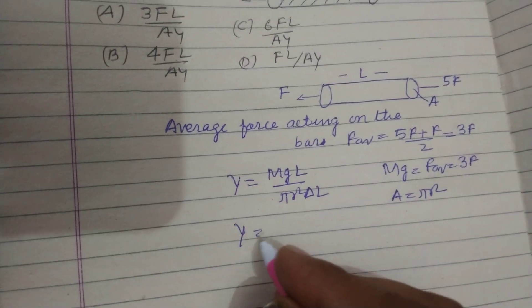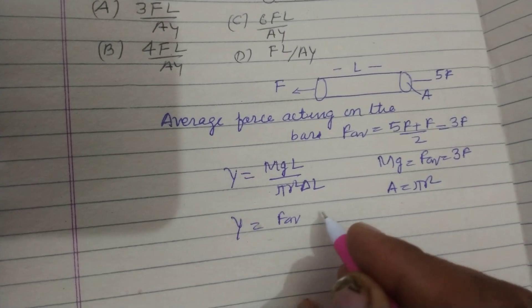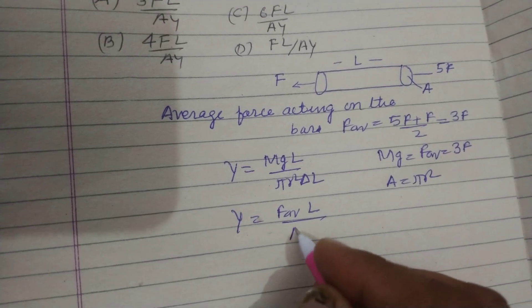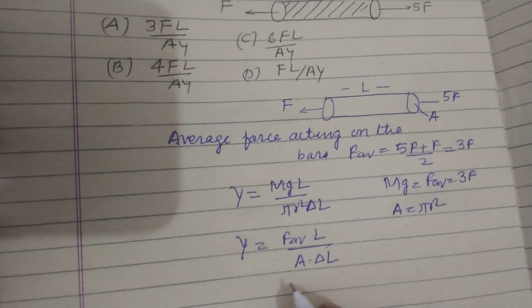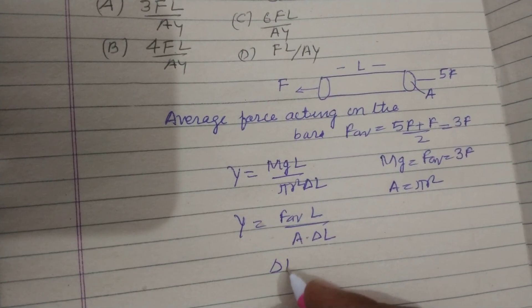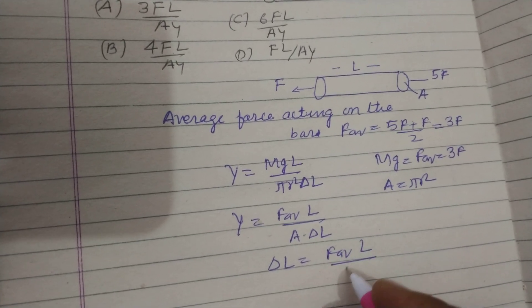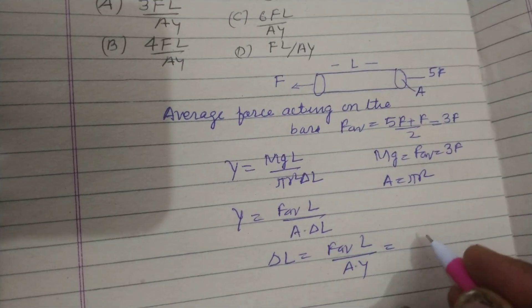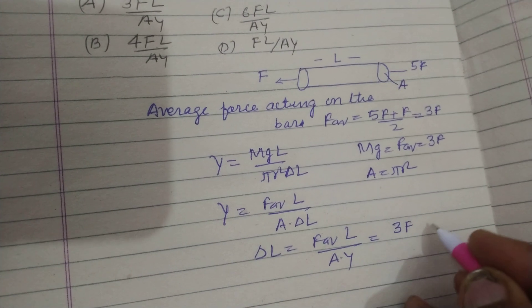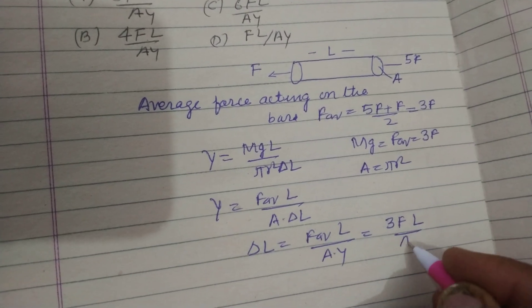So Y equal to F average L upon A into del L. We want to find out del L. So del L equal to F average L upon A into Y. F average is 3F, so del L equals 3FL upon AY.